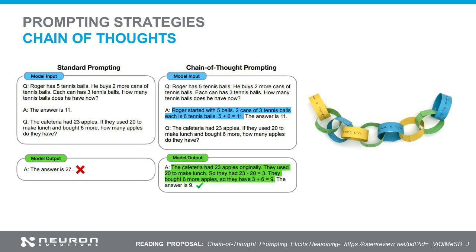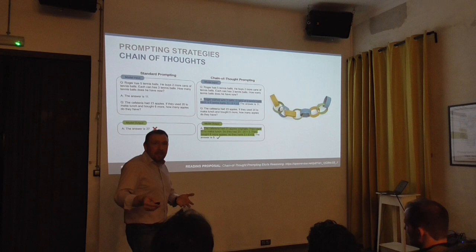Here we talk about Roger and his tennis balls in a can — how many balls can be in a can, and so on. There is a shorthand for this: just say 'think step by step.' That's the easiest way. Instead of giving a full step-by-step example, you just say 'think step by step' and it works.